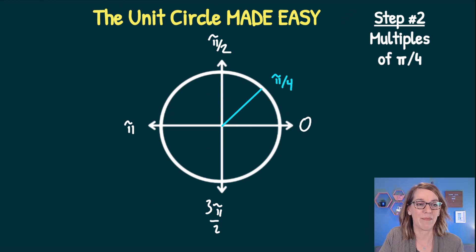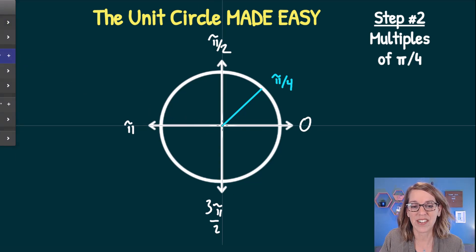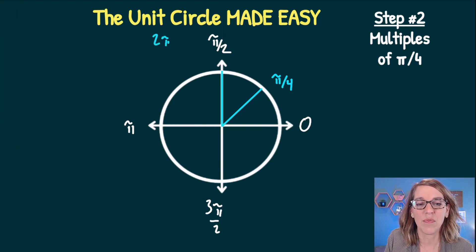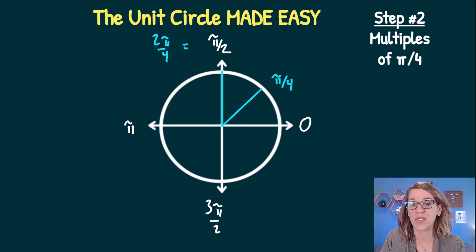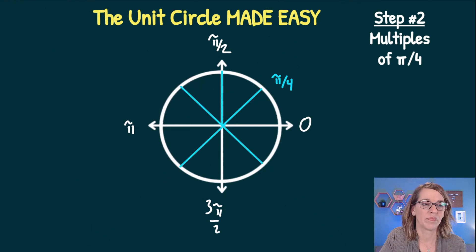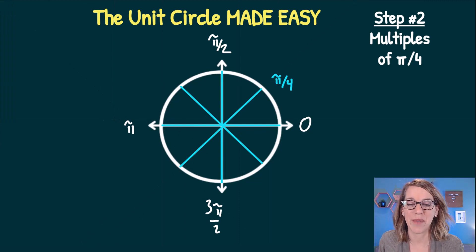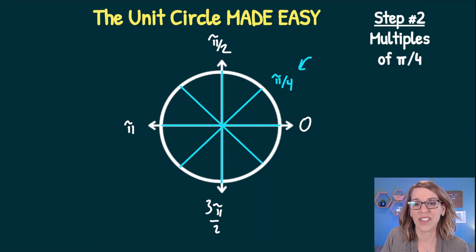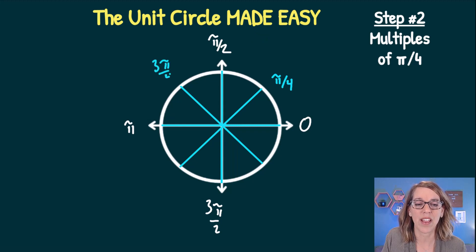Counting in pi-fourths: going another pi-fourths brings me to 2 pi-fourths, which reduces to pi-halves. Continuing to label the 45-degree increments — the first is at pi-fourths, the second is 2 pi-fourths reducing to pi-halves, the next is 3 pi-fourths, and then 4 pi-fourths, which reduces to pi.